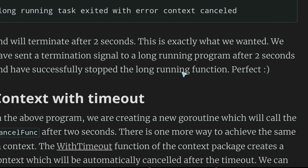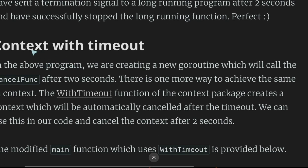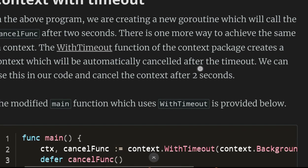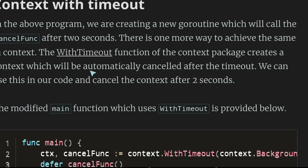This is exactly what we wanted — we sent a termination signal to a long-running program after two seconds and successfully stopped it. But what about the case where we have a two-hour process and want to exit after two minutes, and the program does not check explicitly? Context with timeout: in the above program we are creating a new goroutine which calls the cancel function after two seconds — there is one more way to achieve the same in context.